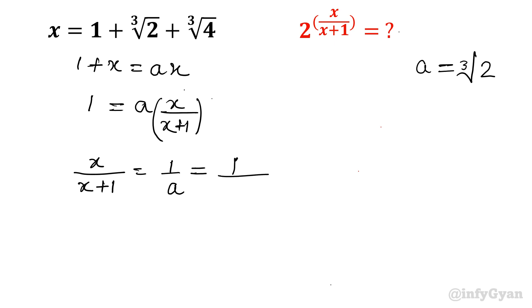So 1 over a will become 1 over cube root 2. So our required value will be 2 power x over x plus 1 will be equal to 2 power 1 over cube root 2.